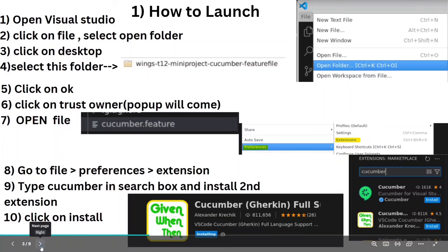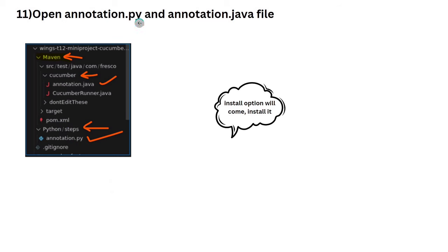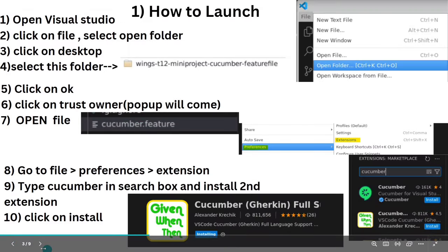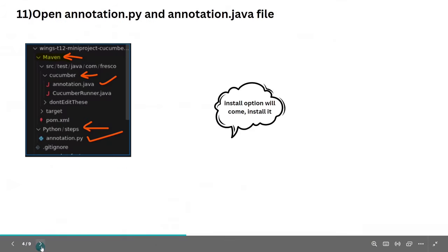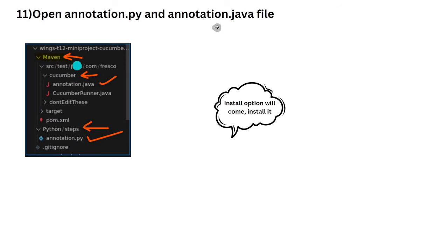We also need to open two more files: annotation.py and annotation.java. We already have cucumber.feature open, so three files total. For annotation.py, click on the Python folder on the left side, then double-click annotation.py. Java is not required, but you can open it as well.